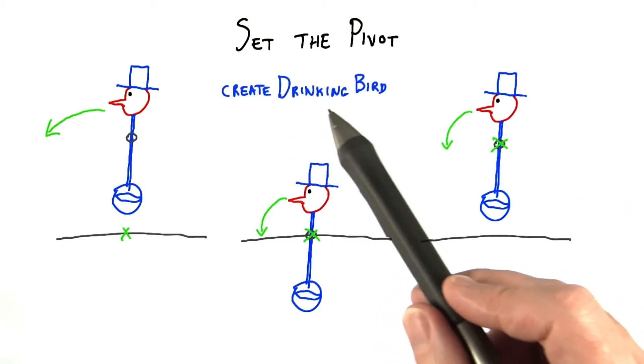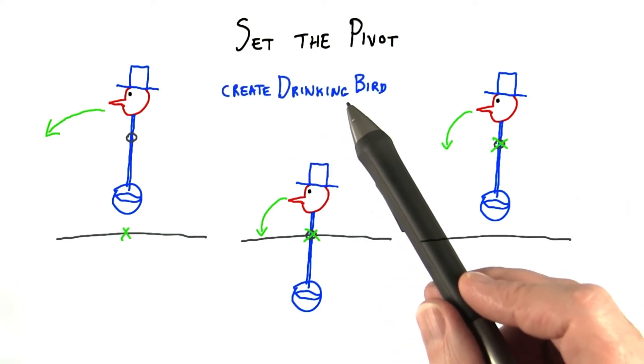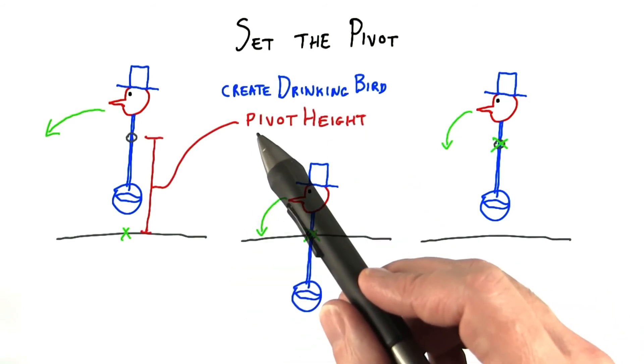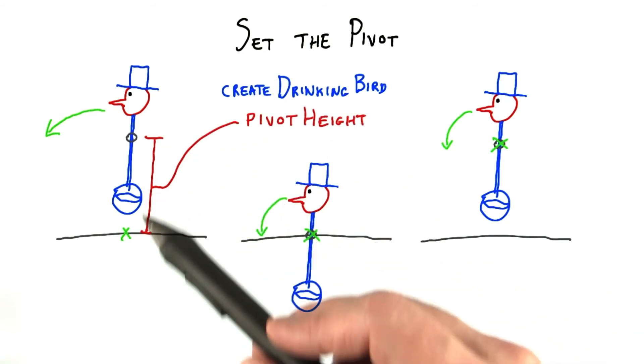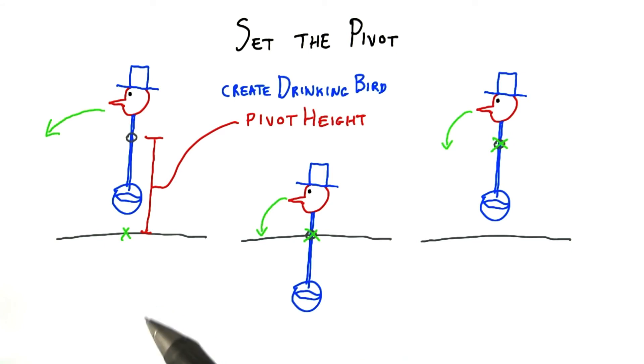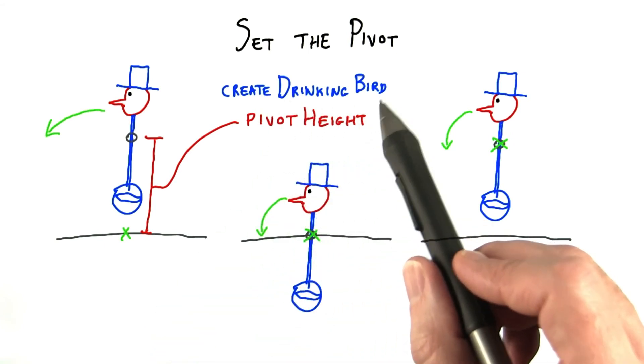Your job is to modify the create drinking bird method so that the pivot is set correctly. I've given you a variable, pivot height, which is the height of the crossbar above the origin. I'll also give you a hint. It should take about three lines of code inside just this method to set the pivot.